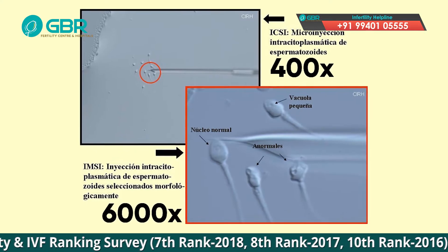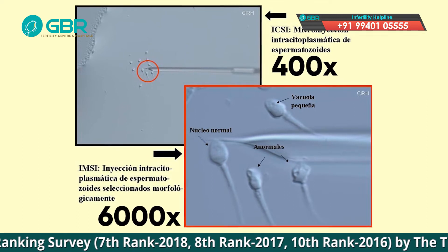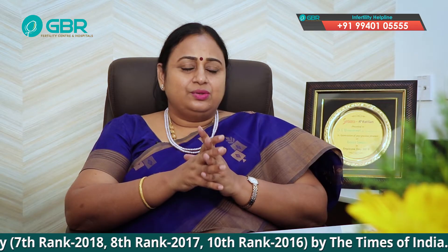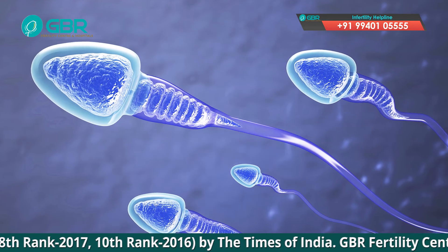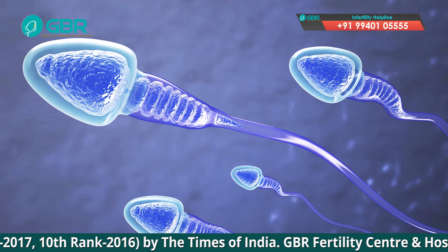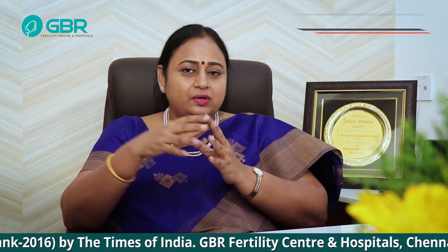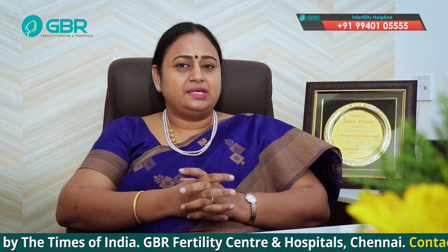We can add a lens that magnifies up to 6000 times, allowing us to study the sperm microscopically at a different level. The head, neck, and tail of the sperm can all be clearly seen, enabling a morphologically better selection of sperms.